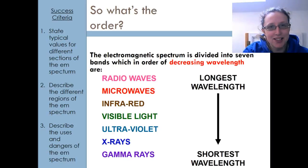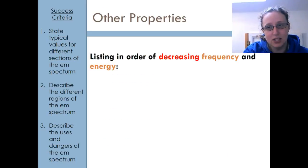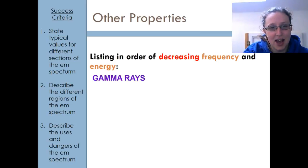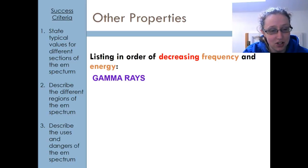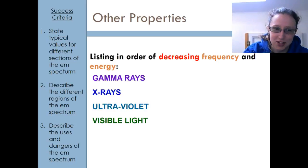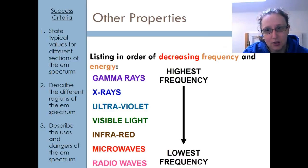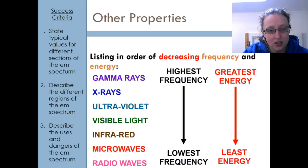You can be asked to list it the other way around though — in terms of decreasing frequency and energy. In which case, I'd start with gamma because they are the highest frequency and the highest energy. Then it goes X-rays, UV, visible light, infrared, microwave, radio waves. So that goes highest to lowest frequency and also highest to lowest energy.